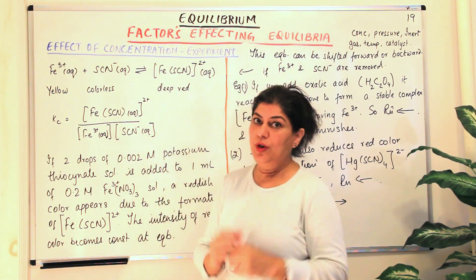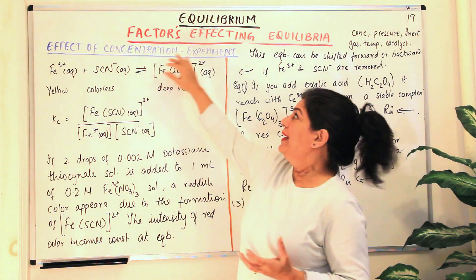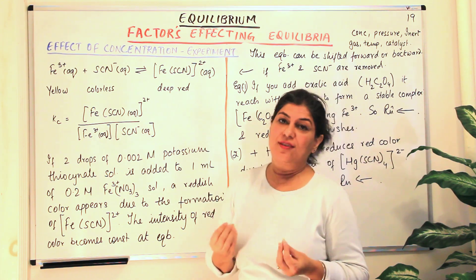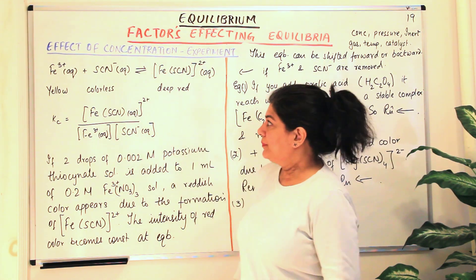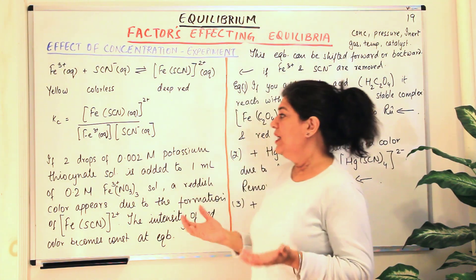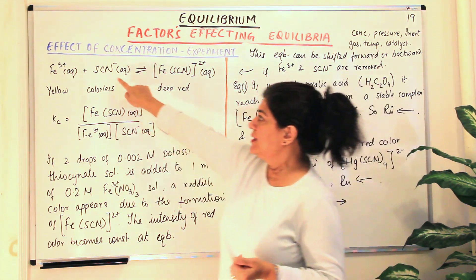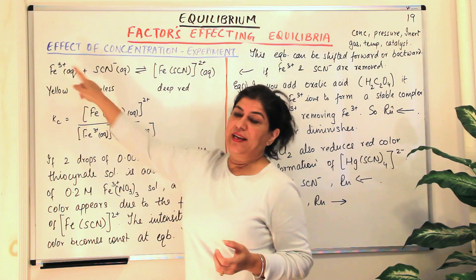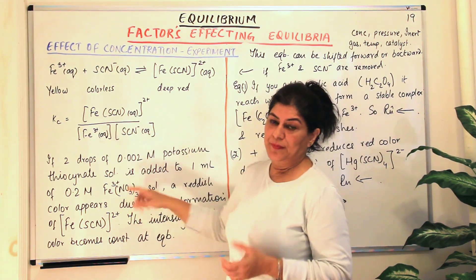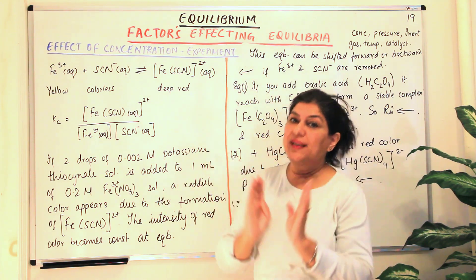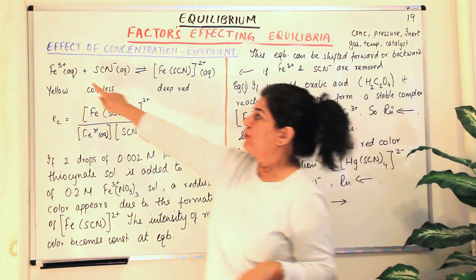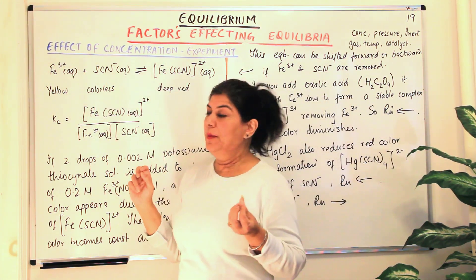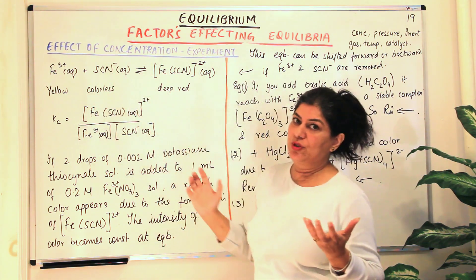Moving ahead with the same discussion, I would now like to explain an experiment through which you can understand the effect of change in concentration on the equilibrium. We take a few drops of potassium thiocyanate, which acts as the source of thiocyanate ions, and ferric nitrate, that is Fe(NO₃)₃. These two ionic compounds are mixed in water and both act as sources of the ferric ions and the thiocyanate ions. Ferric nitrate is yellow in colour and potassium thiocyanate is colourless.